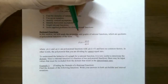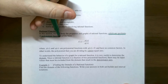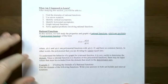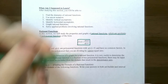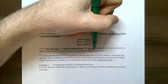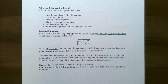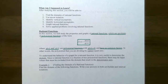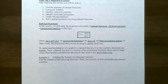Rational functions are quotients of polynomial functions, and we're going to look at their properties and graphs. Rational functions will be of the form P(x) divided by Q(x), where P(x) and Q(x) are polynomial functions. The one restriction is that the denominator cannot be the zero polynomial, and we assume there are no common factors between the two polynomials — that is, after factoring, there are no common factors between numerator and denominator. Since a rational function is a fraction of two polynomials, there may be some values of x where the denominator is zero.